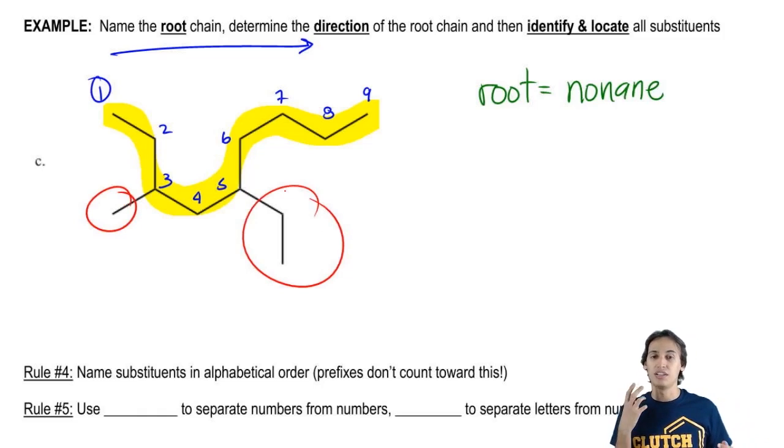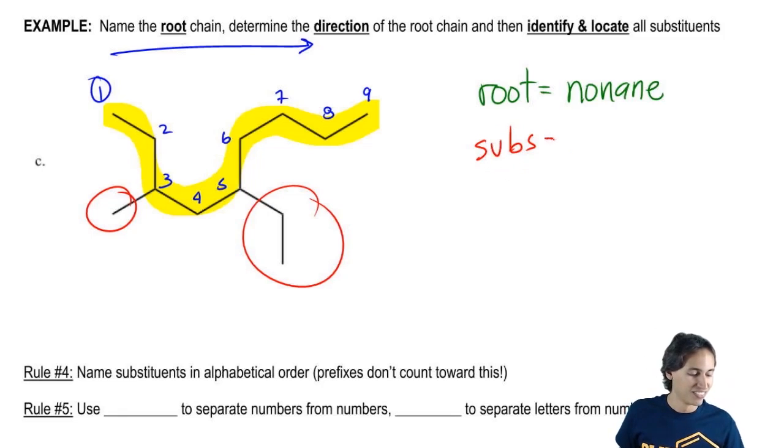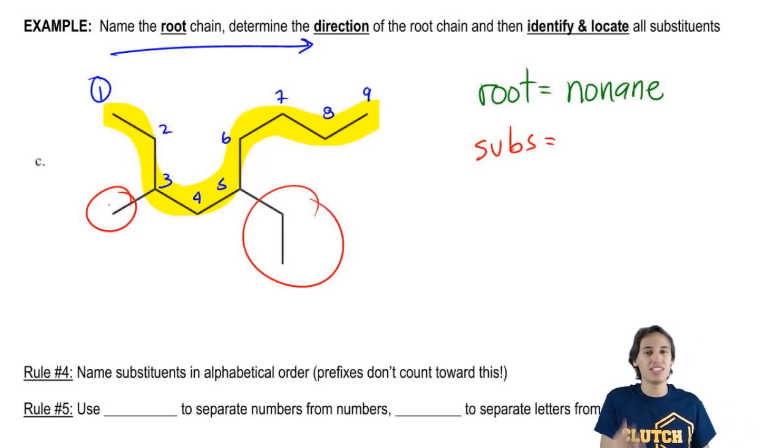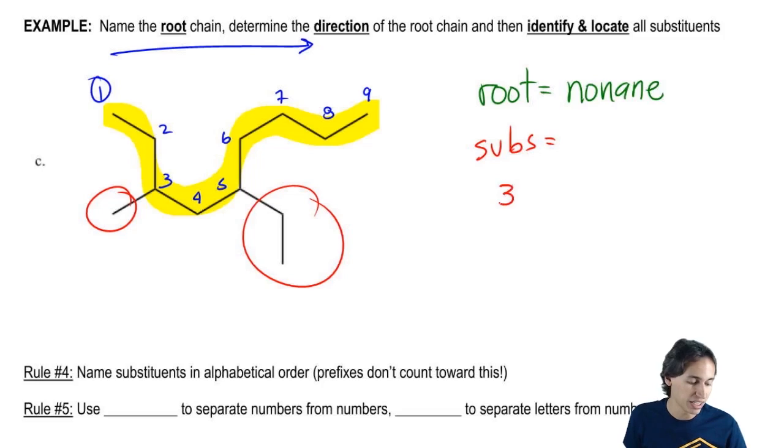So the way we're actually going to name these, I'm just going to put here subs. The way we're going to put these is by naming the location with a hyphen and then we're going to say what the actual alkyl group is. I'm going to teach you more about this as we move down the page, but I'm just telling you this for right now. So one of the substituents would be three-methyl.